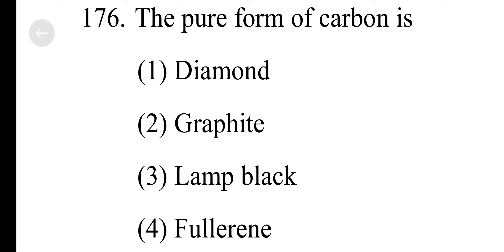The pure forms of carbon are diamond, graphite, lamp black, and fullerene. According to the majority of books, diamond is considered the purest form, while fullerene is given in the NCRT book. So terms like 'pure form' and 'purest form' are used in this context.